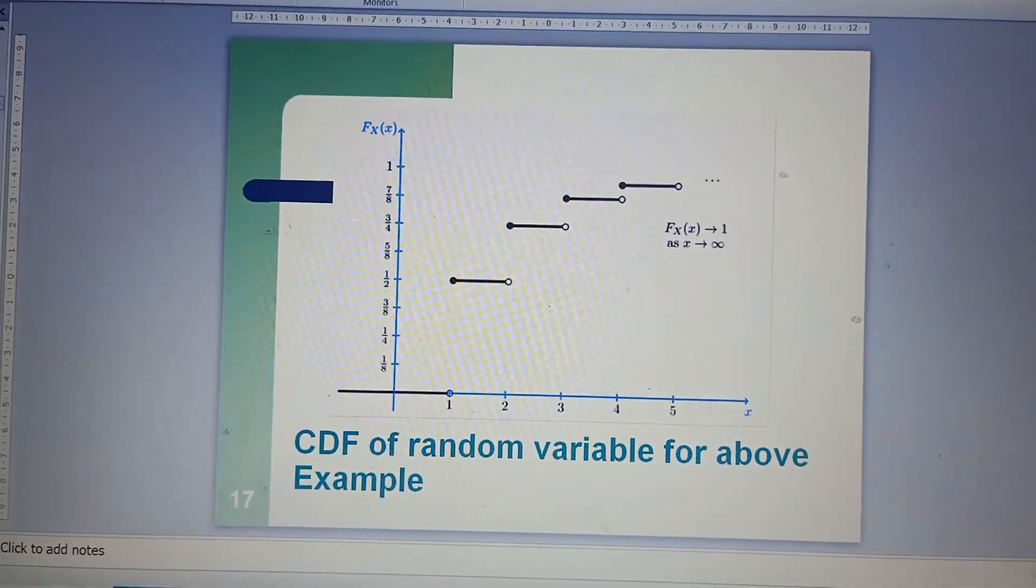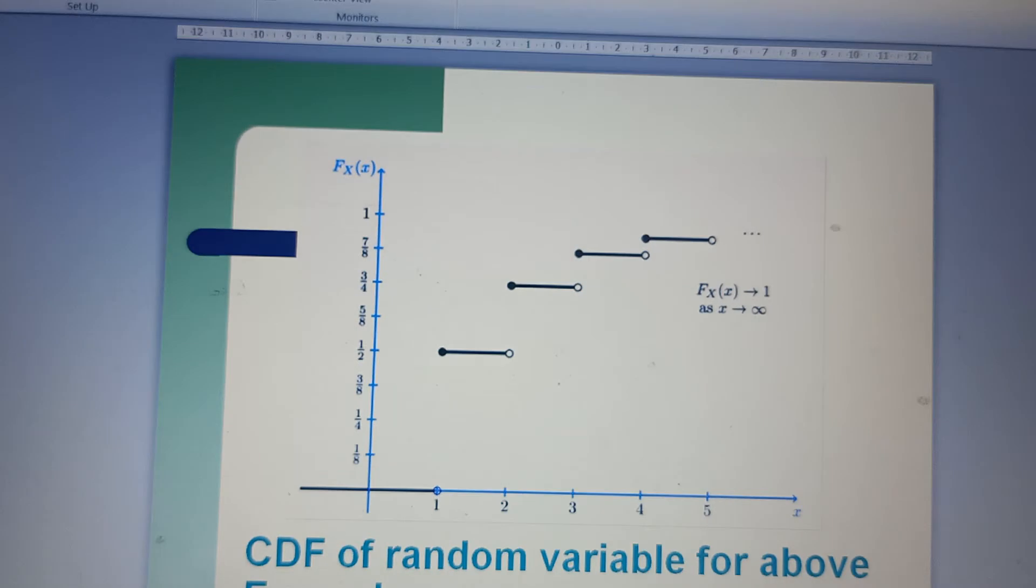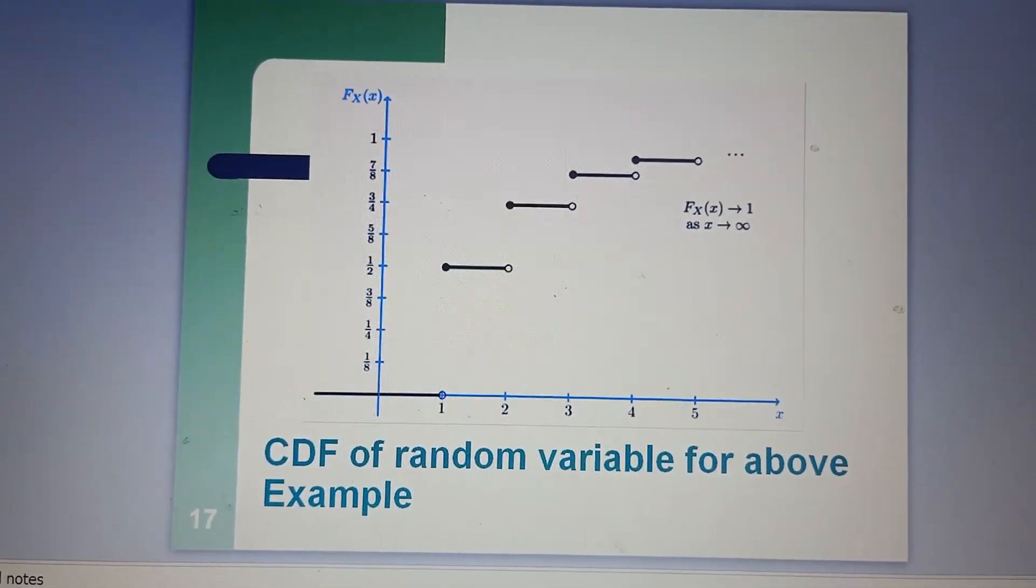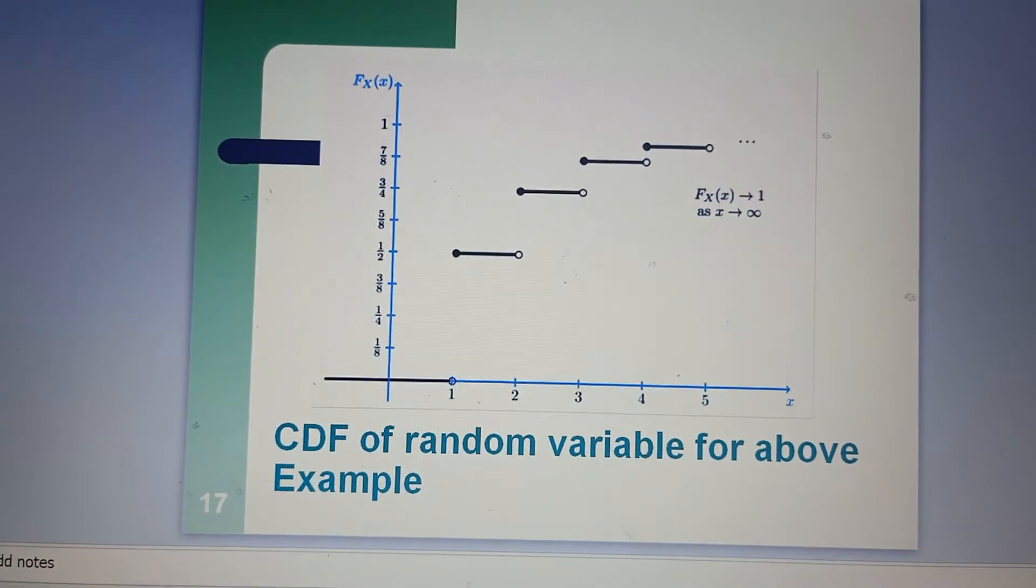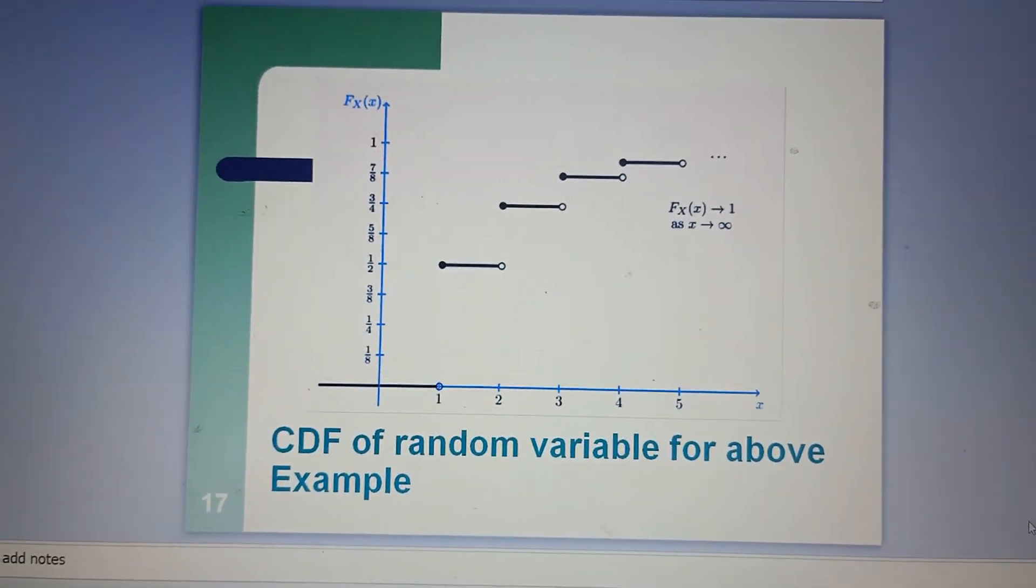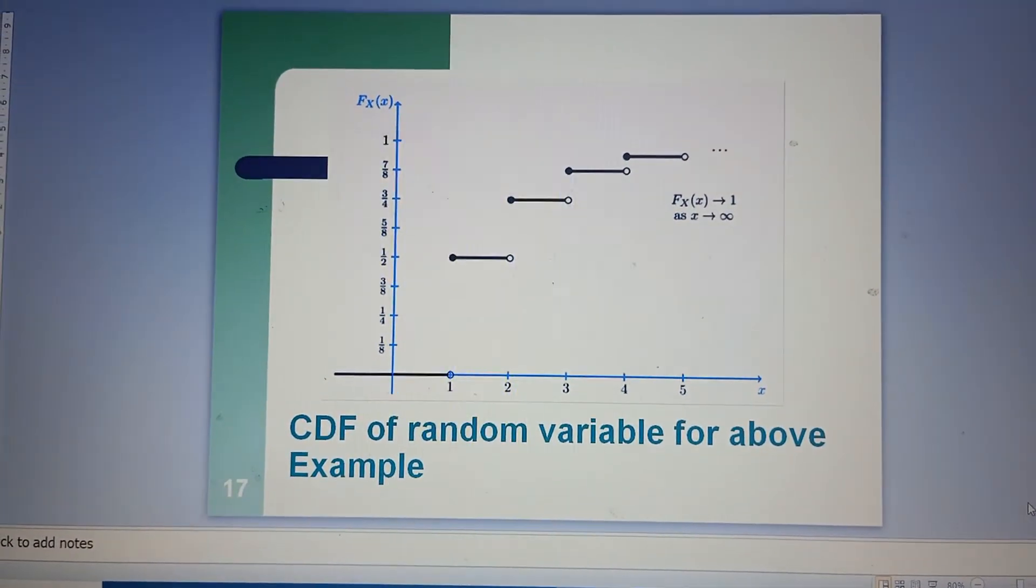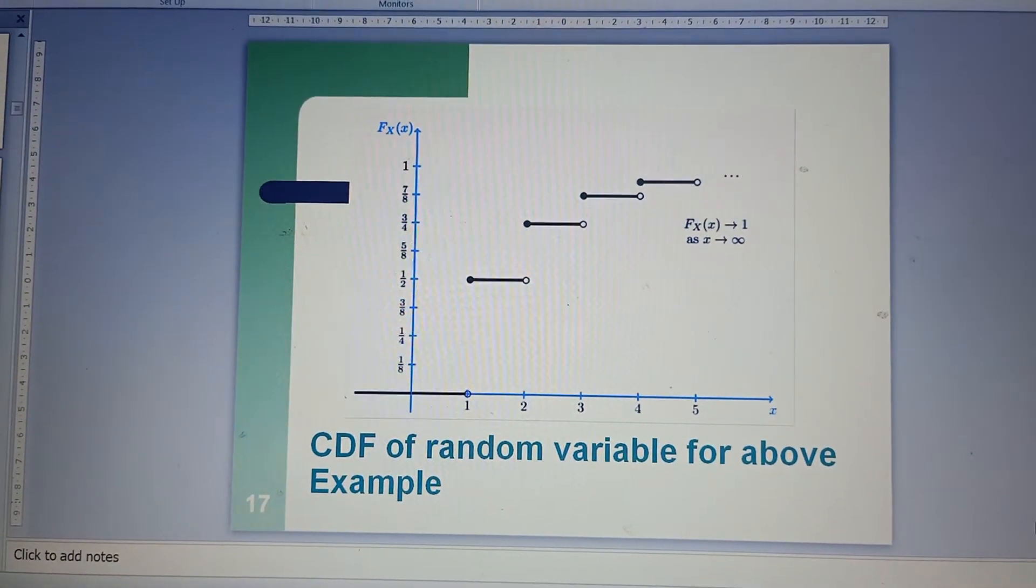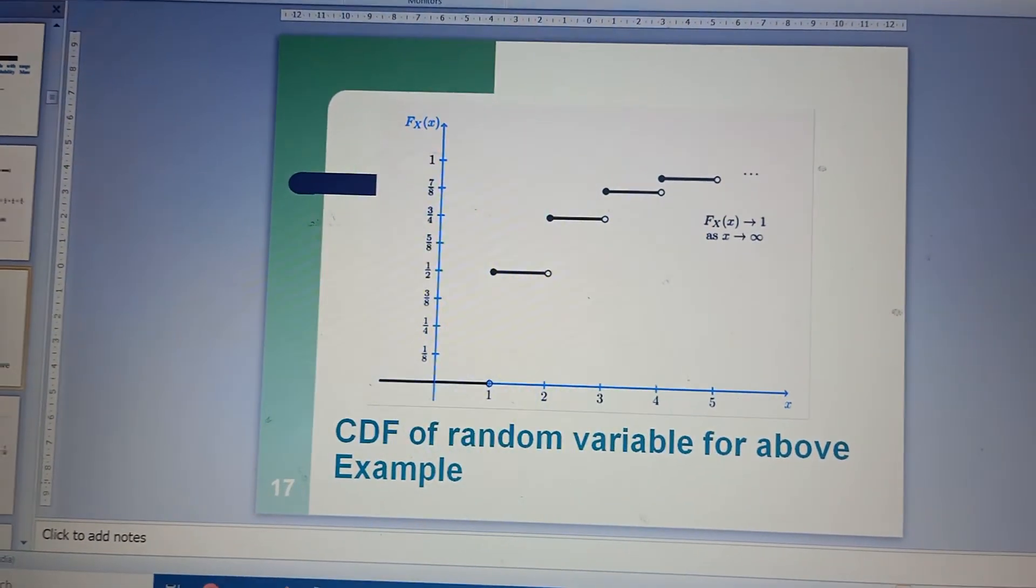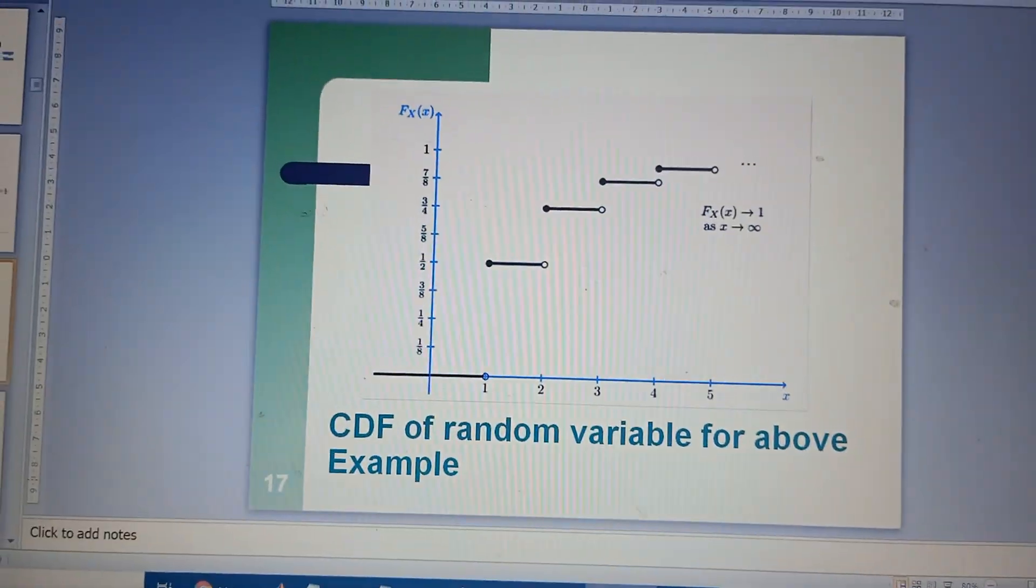Therefore, you can see that this would be the graph that shows you the result. F_X(x) takes the values 1 by 8, 1 by 4, 3 by 8, 1 by 2, and so on. This is the distribution of the variable X in terms of different values. Finally, F_X(x) will be equal to 1 as x tends to infinity.